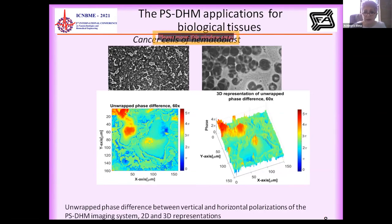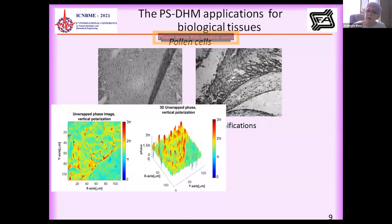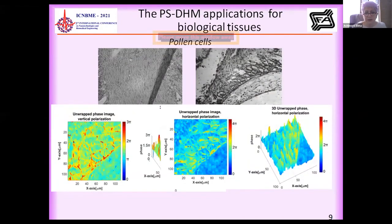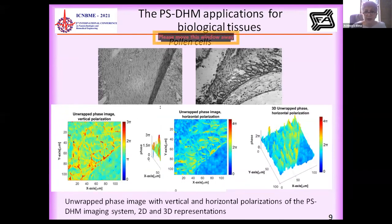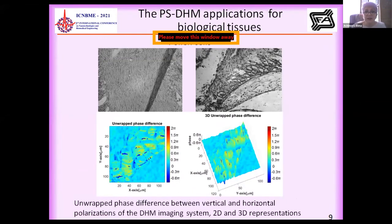We also applied our microscope to pollen cells, at 8x and 20x magnification. We found that only 20x magnification is sufficient to see any peculiarities of these materials. The same unwrapped phase maps at vertical and then horizontal polarization were acquired, shown in 2D and 3D presentations. From the difference between the two polarizations, we see that not all of the material in this sample has anisotropy — only the membranes between the cells exhibit anisotropy.